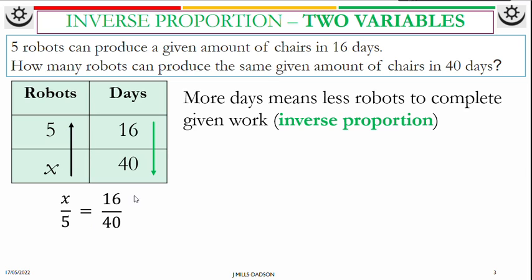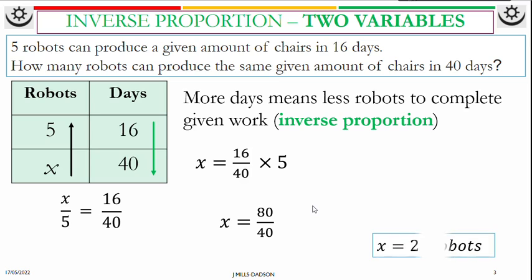Then from here, you multiply both sides by 5 and you work out X. When you work out X, you have 80 divided by 40, and that is 2 robots.